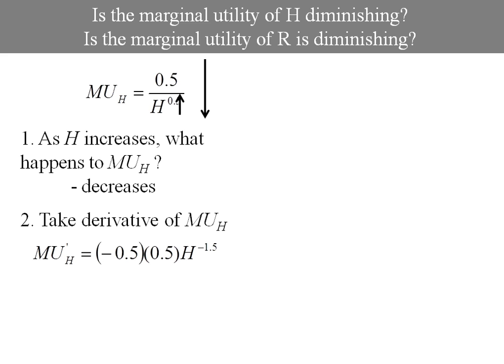The derivative: we've got that negative exponent on the H, so that negative 0.5 comes down in front, multiplied by the 0.5 that was already there, H to the negative 1.5. Looking at this, you could put that H to the negative 1.5 in the denominator if you like, but that negative sign out in front tells us that the first derivative of marginal utility is negative. So we do have diminishing marginal utility in good H.